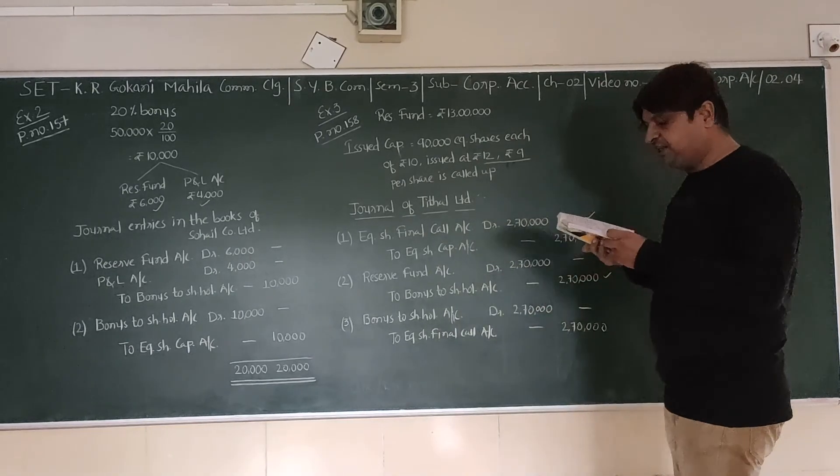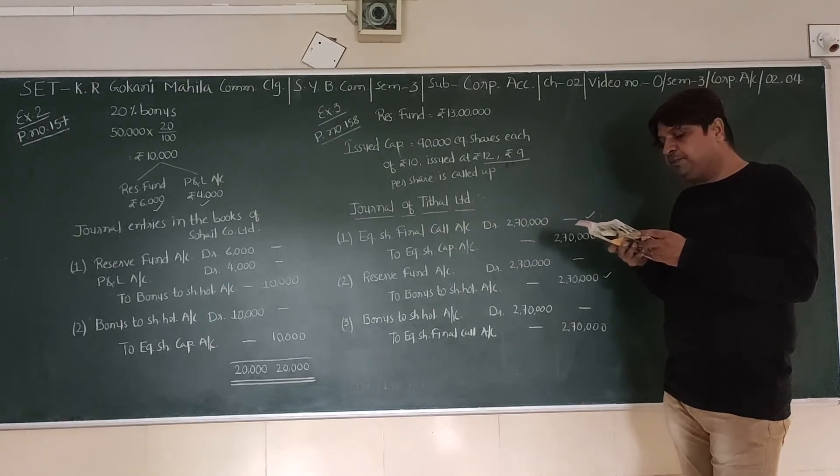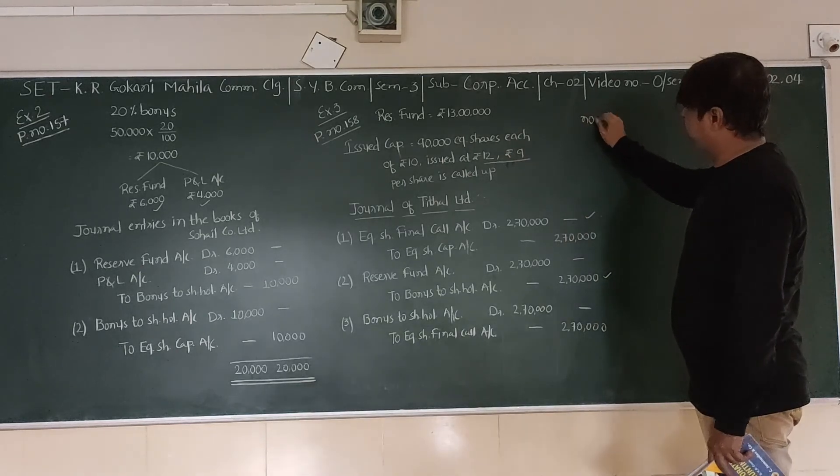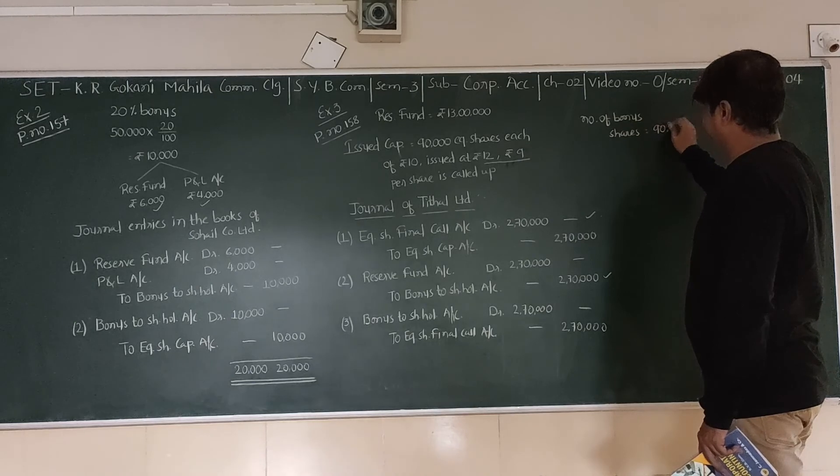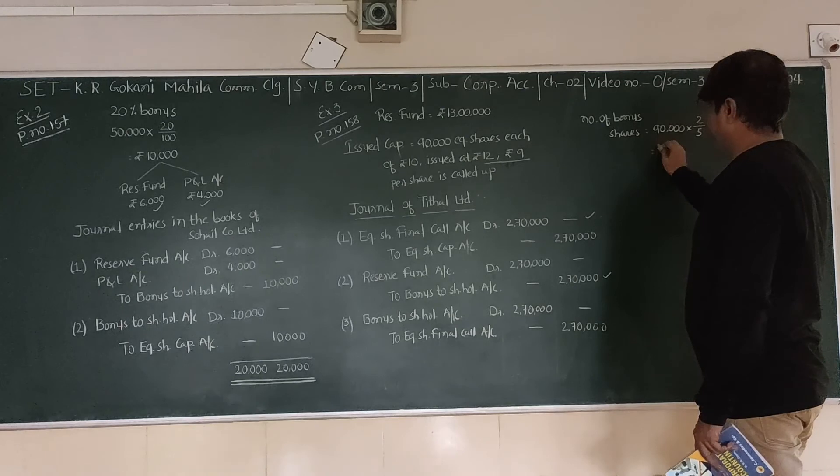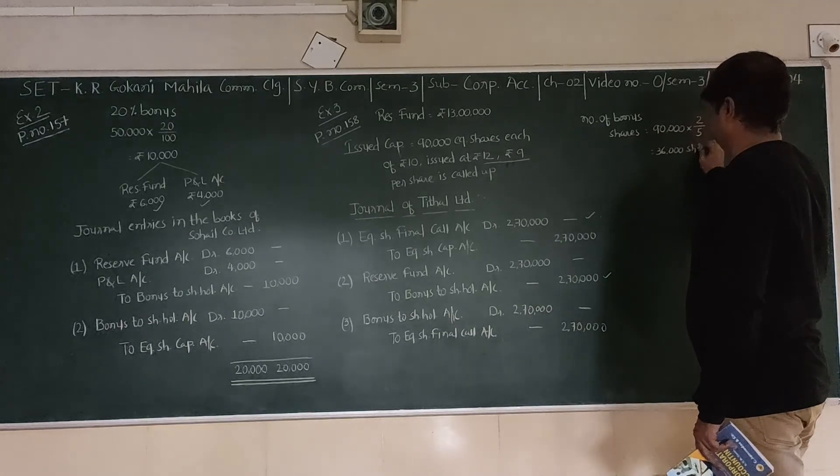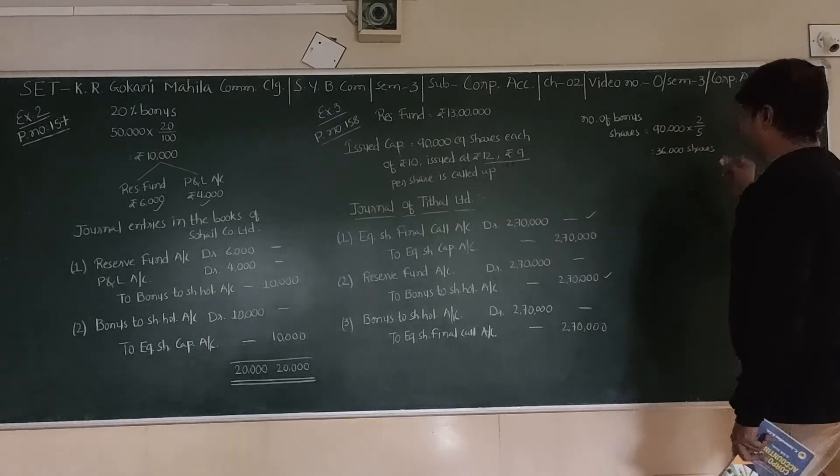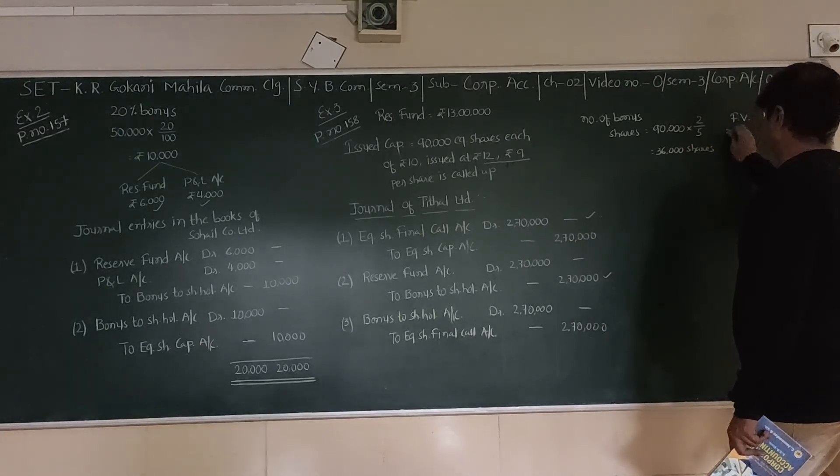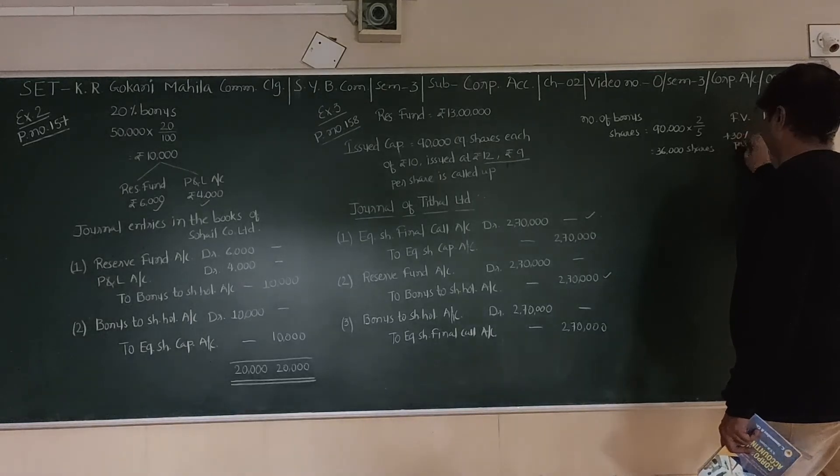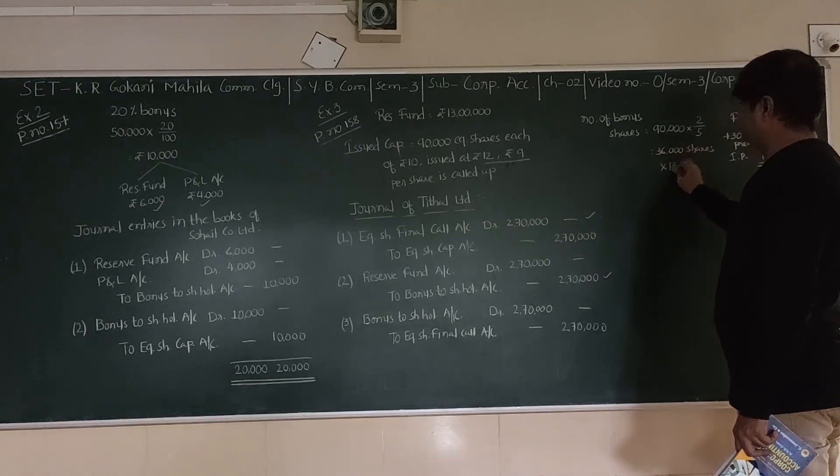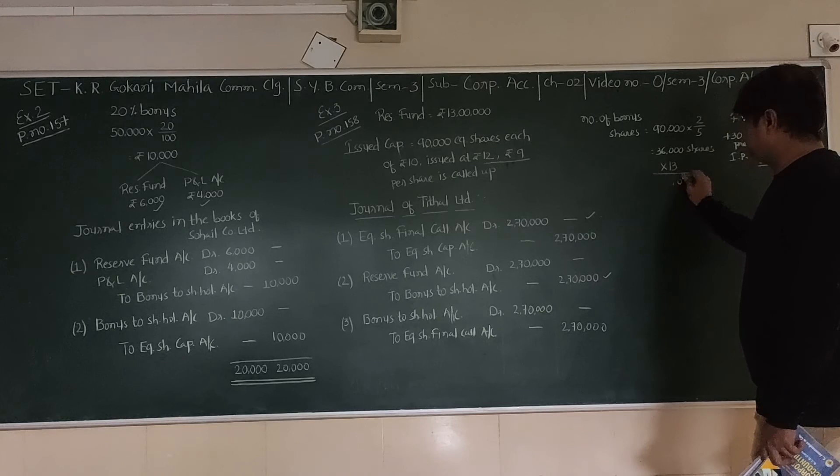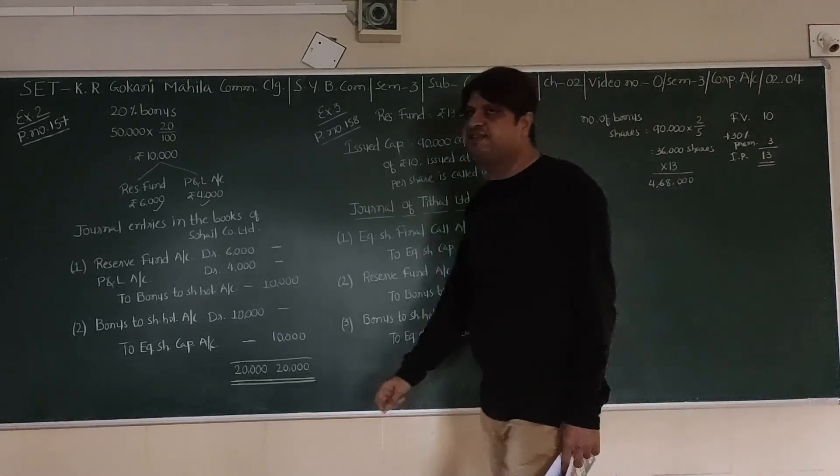We are given that two bonus shares are given for every five shares held. We have 90,000 shares, so number of bonus shares will be 90,000 into 2 divided by 5, which is 36,000 bonus shares. These shares had a face value of 10 and 3 premium, so issue price is 13.